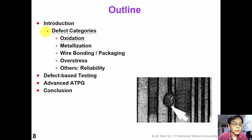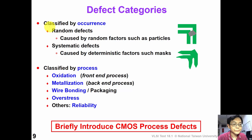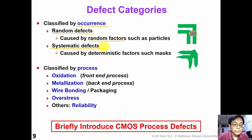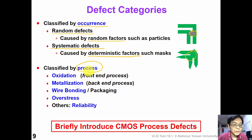We are going to introduce different categories of defects. We can classify defects by their occurrence: random defects are caused by random factors such as particles, while systematic defects are caused by deterministic factors. We can also classify defects by their process steps. For example, in the CMOS process we have oxidation-related defects, metallization defects, wire bonding overstress, or reliability defects. In the following slides we will briefly introduce the CMOS process-related defects one by one.